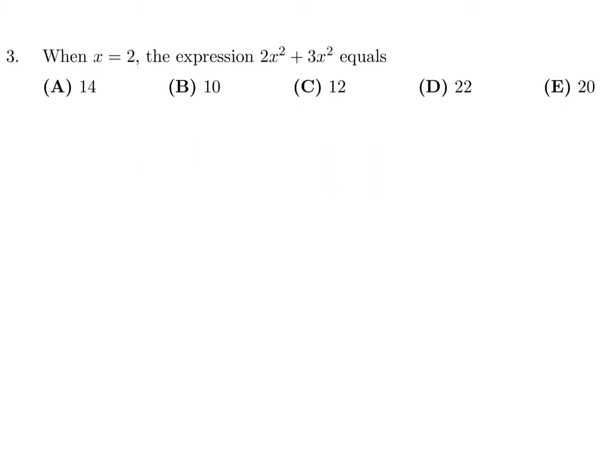When x equals 2, this expression equals 2x² plus 3x². If you combine that, that's 5x². Substitute for x the value of 2, and you get 5 times 2², which is 4. 5 times 4 is 20. Number 3, answer is E.